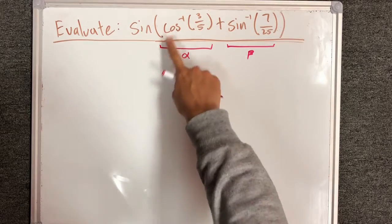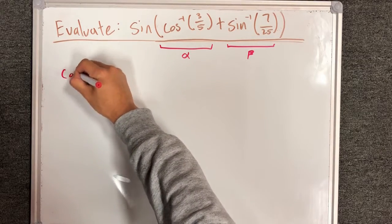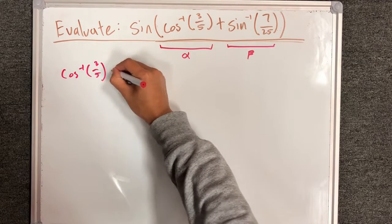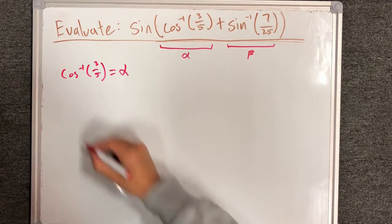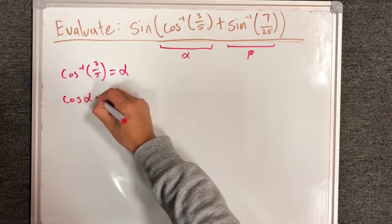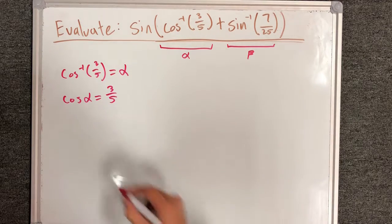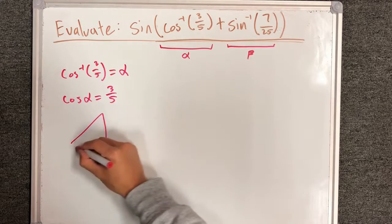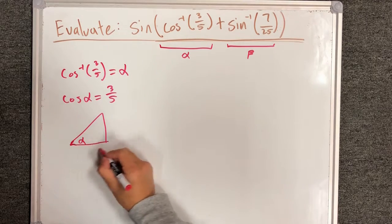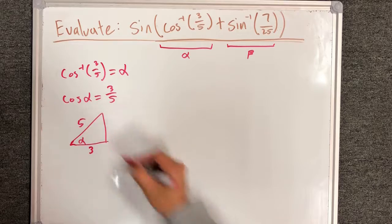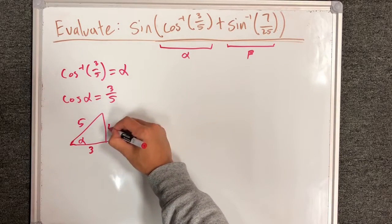I can treat this as saying that cosine inverse of 3 over 5 is equal to alpha. Therefore, cosine of alpha will be 3 over 5. The corresponding triangle for this looks as follows. If this was alpha, the adjacent is 3, the hypotenuse is 5, and the other leg must be 4.